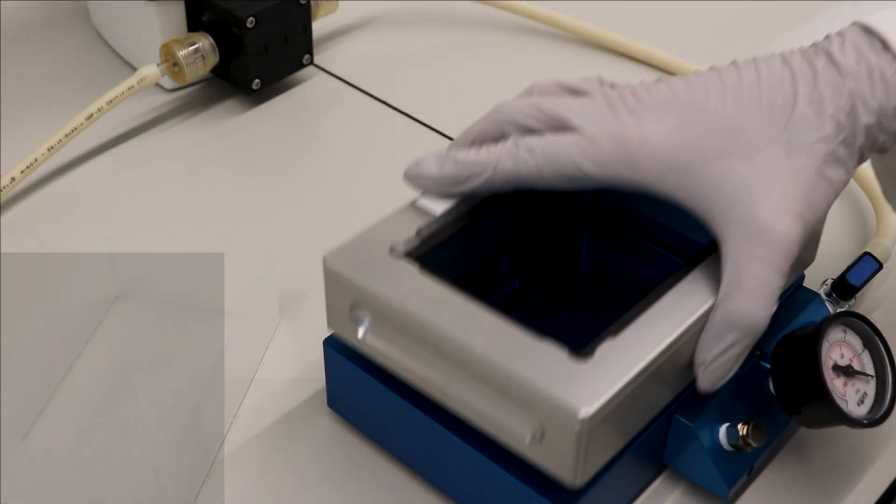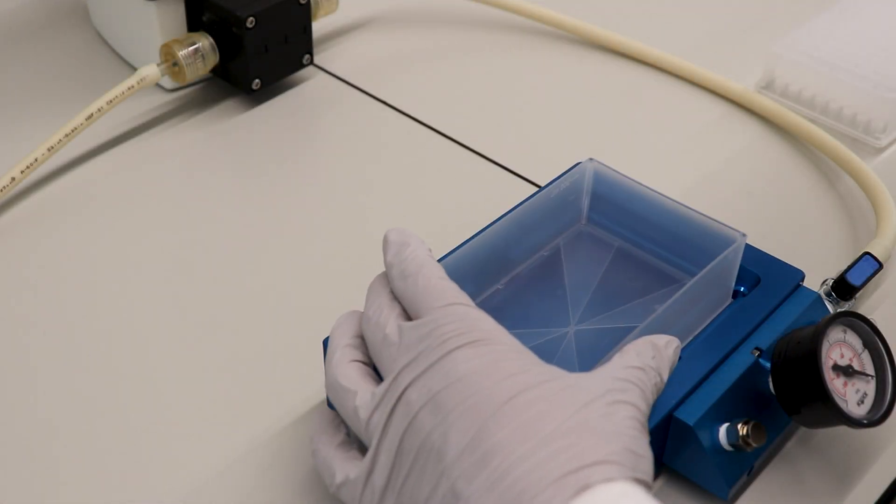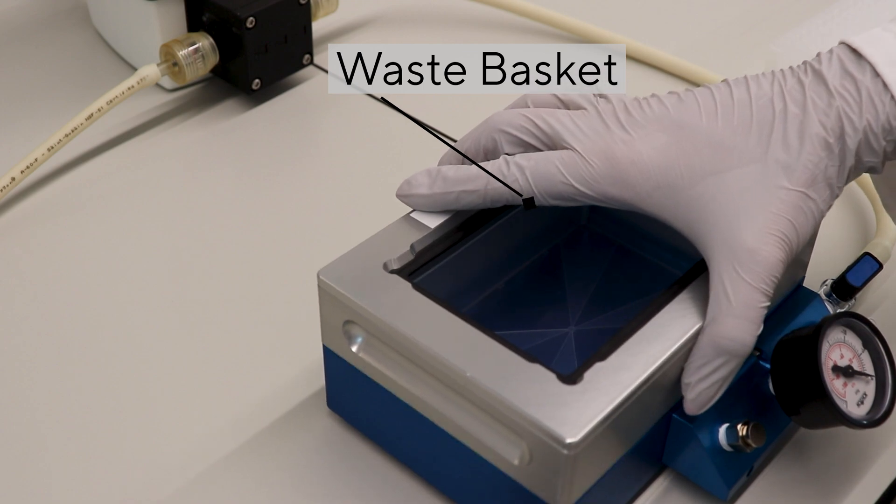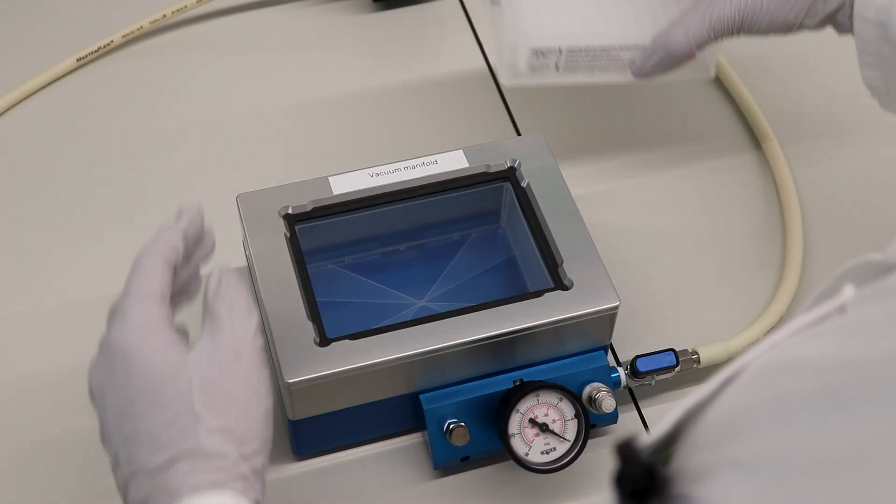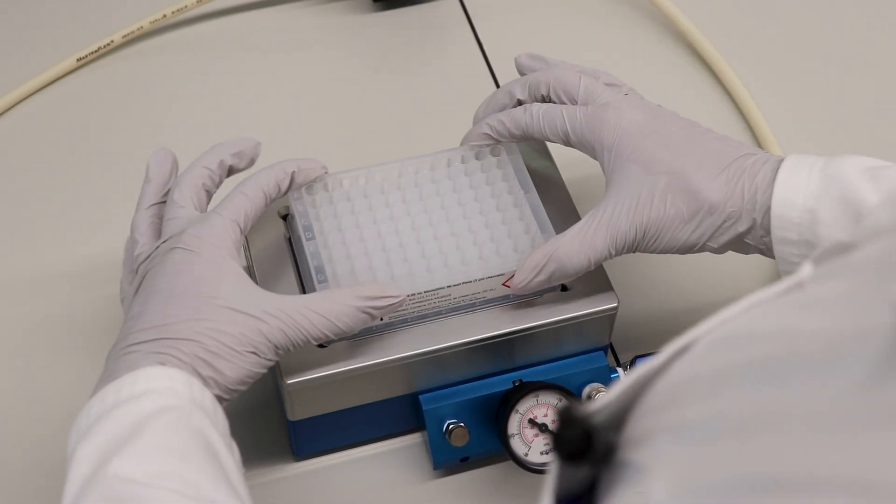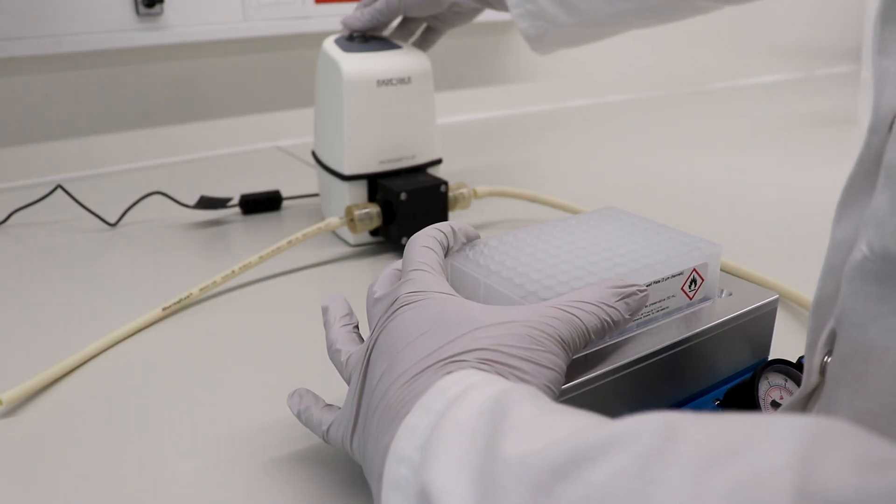When operating the plates with vacuum, begin by placing the waste basket inside the vacuum manifold, followed by the spacer and the plate. Make sure the seal is tight and turn on the vacuum pump.